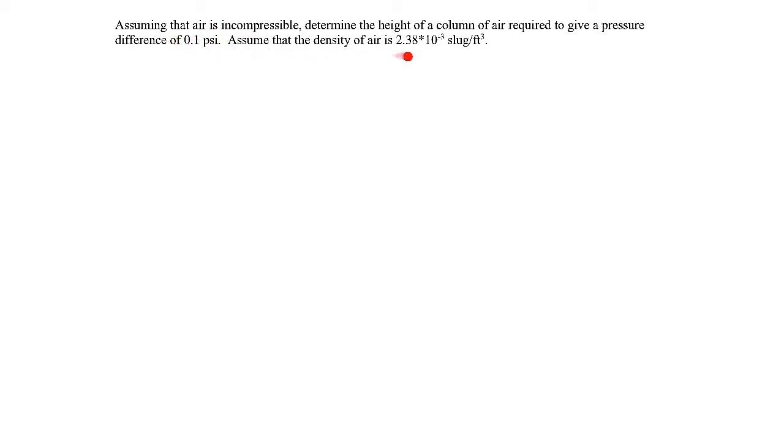We're told to assume the density of the air is 2.38 times 10 to the minus 3 slugs per cubic foot. Since the air is assumed to be incompressible, we can determine the height of the column just from the simple hydrostatic pressure relation for incompressible substances.